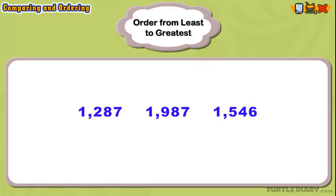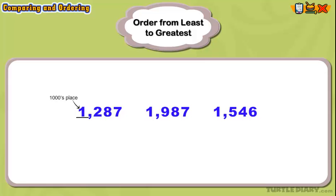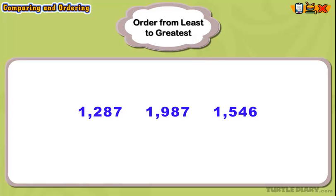By looking at all three numbers, we can tell that they are in the thousands place as they have four digits. All the digits in the thousands place are a one, so we move to the right, or next place value. The next place value is the hundreds place. We notice that the digits in the hundreds place are all different.